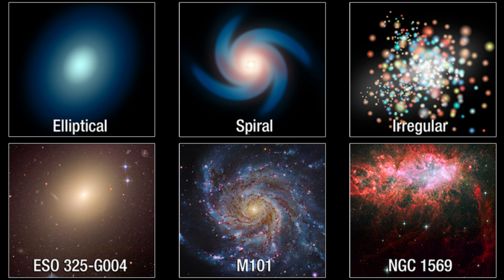Spirals, exemplified by our Milky Way, boast graceful spiral arms where new stars are born, while ellipticals take on a more spherical shape, often hosting older star populations.